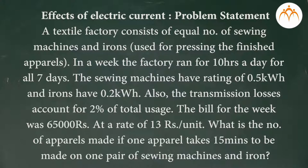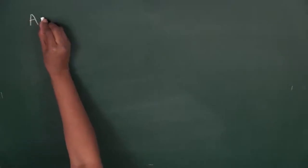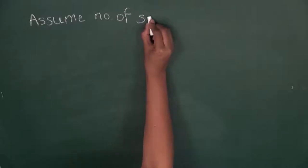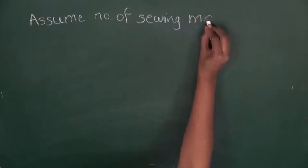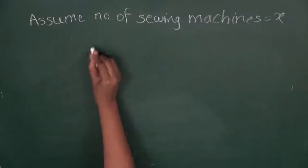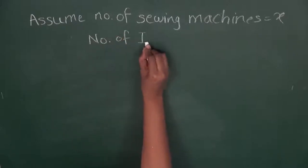So here we have a typical scenario in a textile factory where there are sewing machines and irons, equal in number. We have been given for how much time they were operated and their ratings as well. Then we know what was the bill for that week, and we have to calculate the number of apparels made. Since we don't know the exact number, let us say the number of sewing machines is x. Using the condition that sewing machines and irons are equal in number, the number of irons is also x.